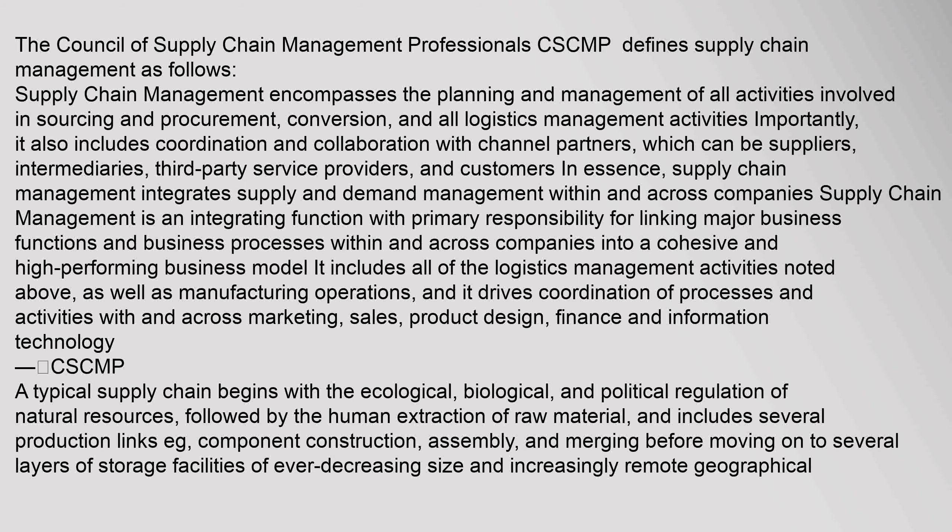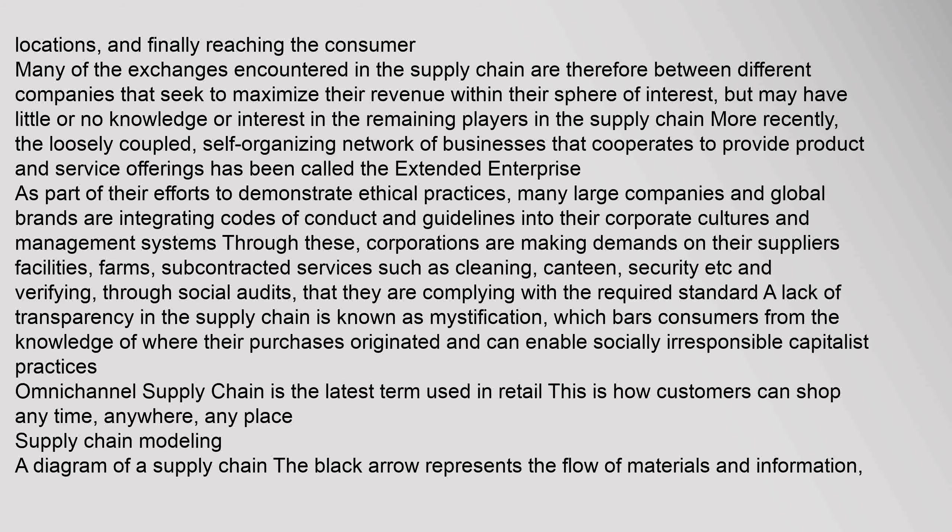A typical supply chain begins with the ecological, biological, and political regulation of natural resources, followed by the human extraction of raw material, and includes several production links — e.g., component construction, assembly, and merging — before moving on to several layers of storage facilities of ever-decreasing size and increasingly remote geographical locations, and finally reaching the consumer. Many of the exchanges in the supply chain are between different companies that seek to maximize their revenue within their sphere of interest, but may have little or no knowledge of the remaining players in the supply chain. The loosely coupled, self-organizing network of businesses that cooperates to provide product and service offerings has been called the extended enterprise.